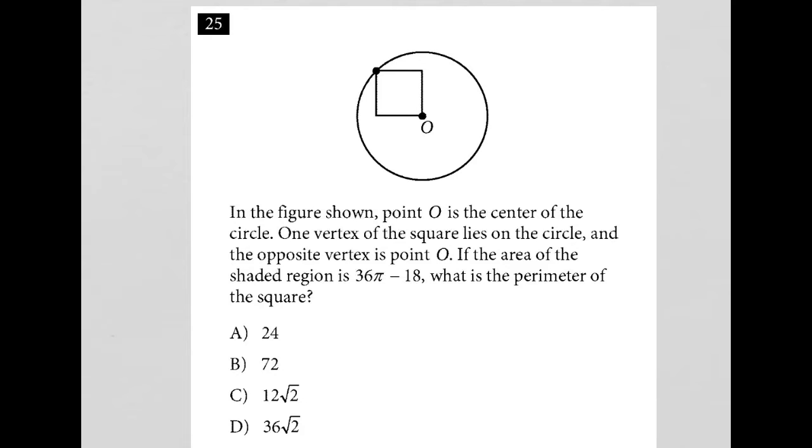So this question looks like it has a circle and a square here. Let's read the question to see what's happening and what we're asked to determine. So the question says, in the figure shown, point O is the center of the circle.